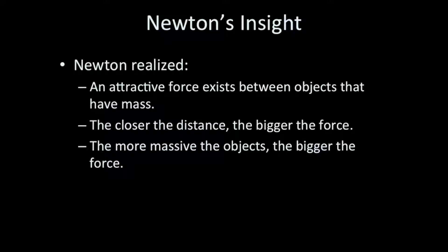Newton realized, by looking at especially Kepler's work with planetary orbits, that gravity is an attractive force, and that the closer the distance between objects that have mass, the bigger the gravitational force, and that the bigger the masses of the objects, the bigger the gravitational force. Newton determined the form of the gravity relationship by looking at Kepler's laws of planetary motion.